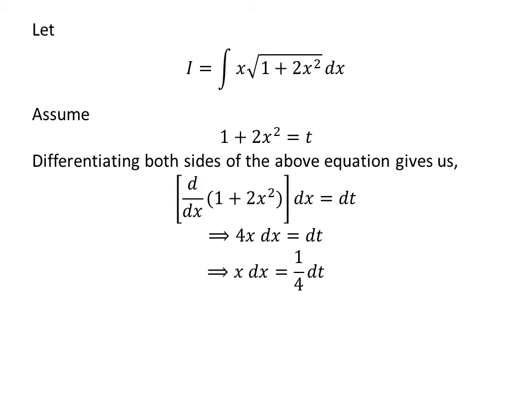Shifting 4 to the right hand side in the above equation gives us x times differential of x is equal to 1 upon 4 times differential of t.